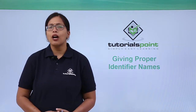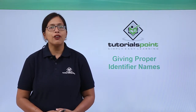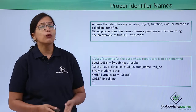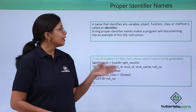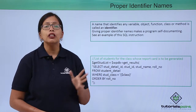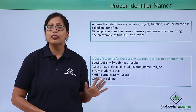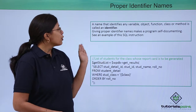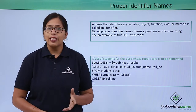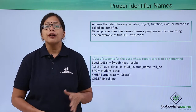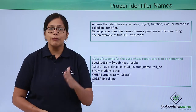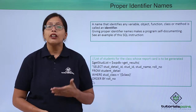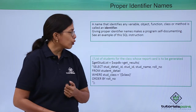In this video we are going to see how we can give proper identifier names in our program. An identifier is a name given to any variable, object, class, method, function, or block inside a program. You should give proper identifier names so that it makes your program self-documenting — meaning by reading the name of the variable, you can understand what that variable is doing or what type of data it is storing.